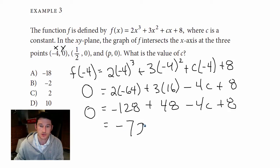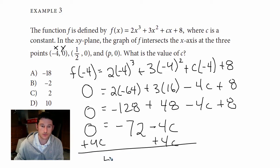And we'll just move the 4c over. So we get 4c = -72.